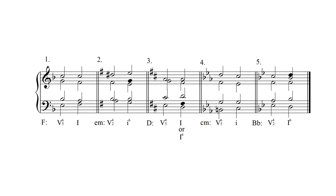Next, keep the common tone, which is the B in the tenor voice. Then resolve the chordal fifth either up or down by step — either solution works. The F sharp can move down to E, or up by step to G. Either doubling works for the first inversion triad, as first inversion triads typically have more varied doubling possibilities.